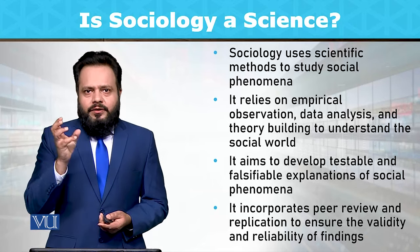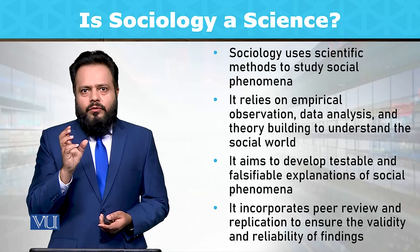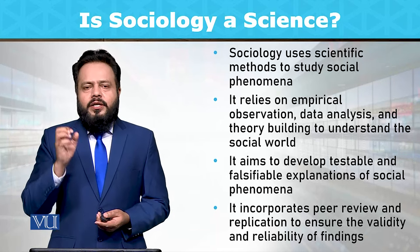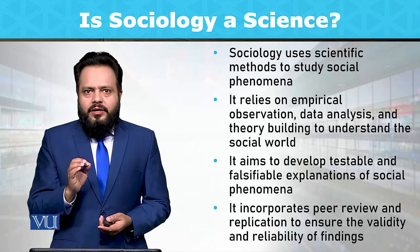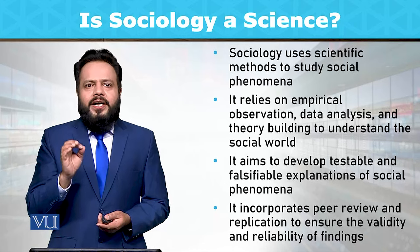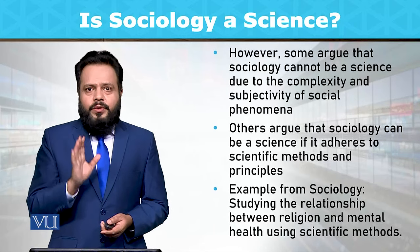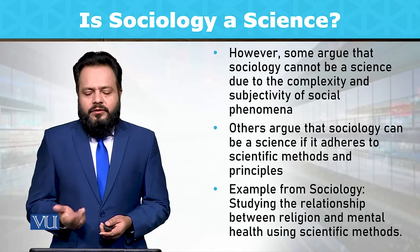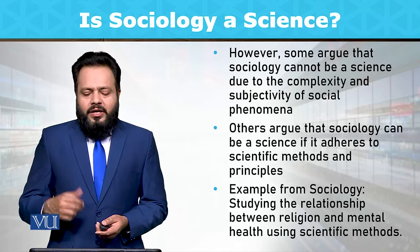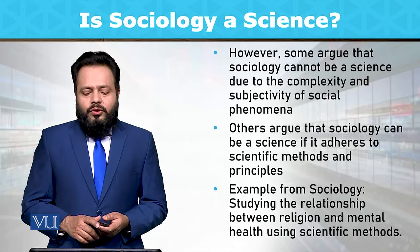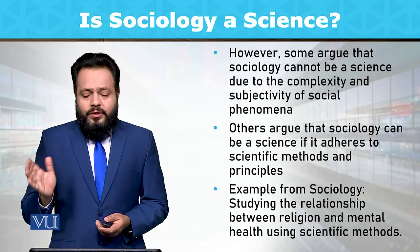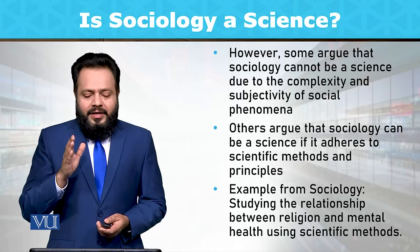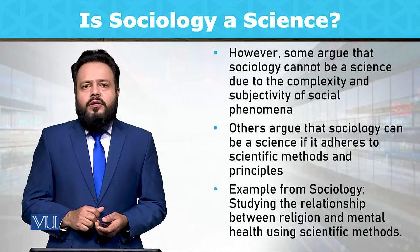These different angles and indicators lead us to conclude that yes, sociology can be considered a scientific discipline. However, some argue that sociology cannot be a science due to the complexity and subjectivity of social phenomena.